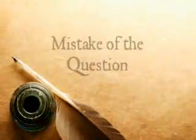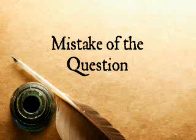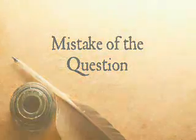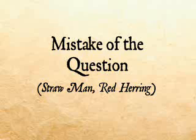One kind of sophism is the mistake of the question. It occurs when something else is proved which does not have a connection to or is not consistent with the matter we are looking into. The end result gives no determination to what we were inquiring about. The conclusion is not true. This sophism is also commonly known as the straw man or red herring. It is a diversionary tactic away from the true matter.